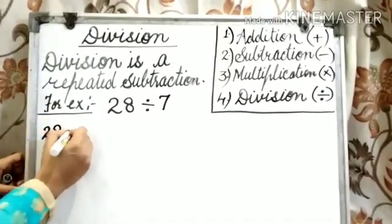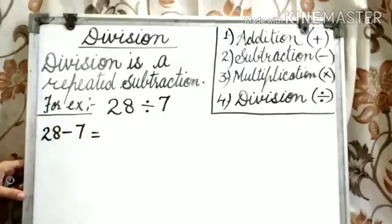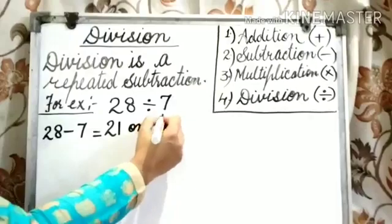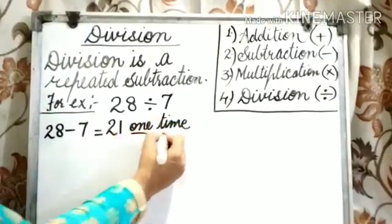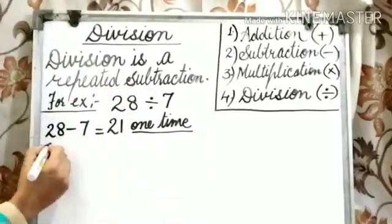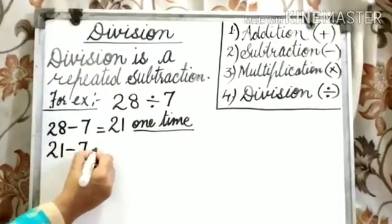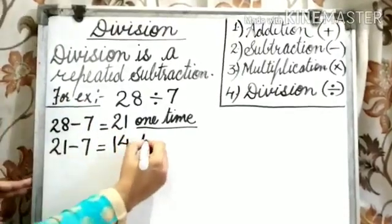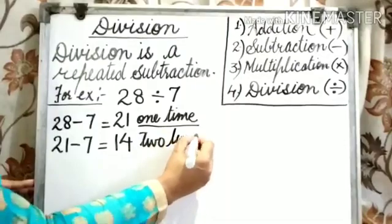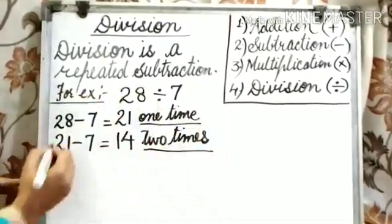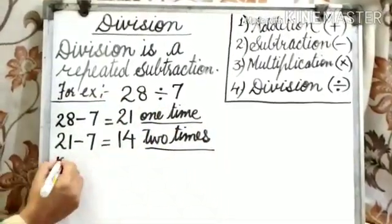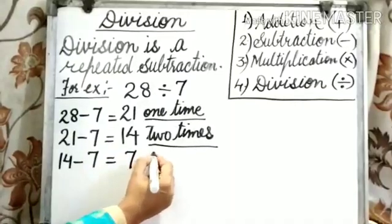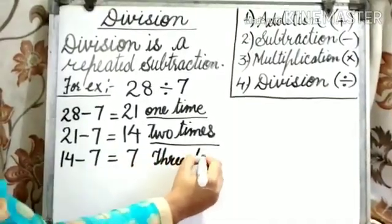28 minus 7 is equal to 21. This is the first time. Now, 21 minus 7 is equal to 14. Now, 14 minus 7 is equal to 7. Three times.